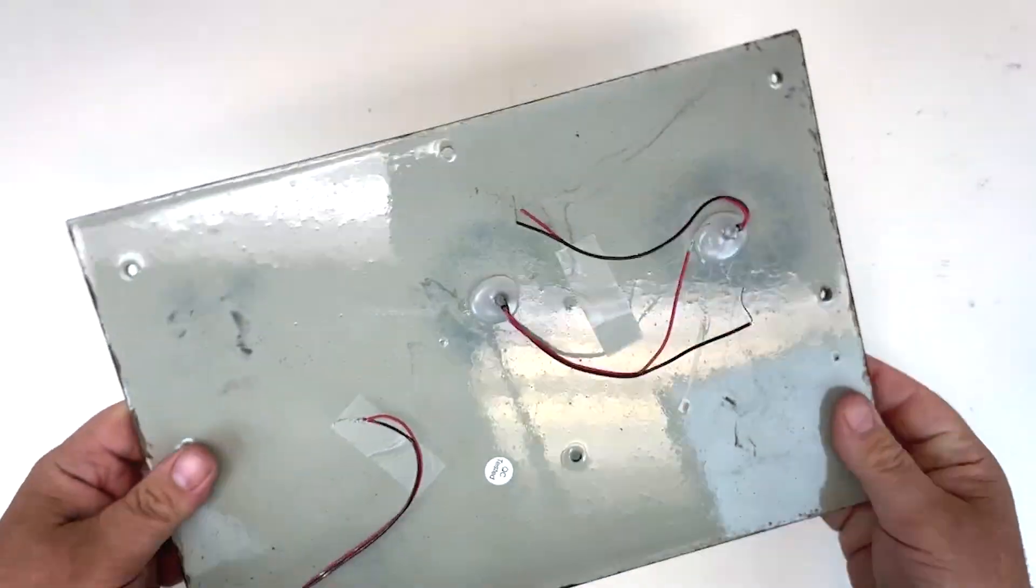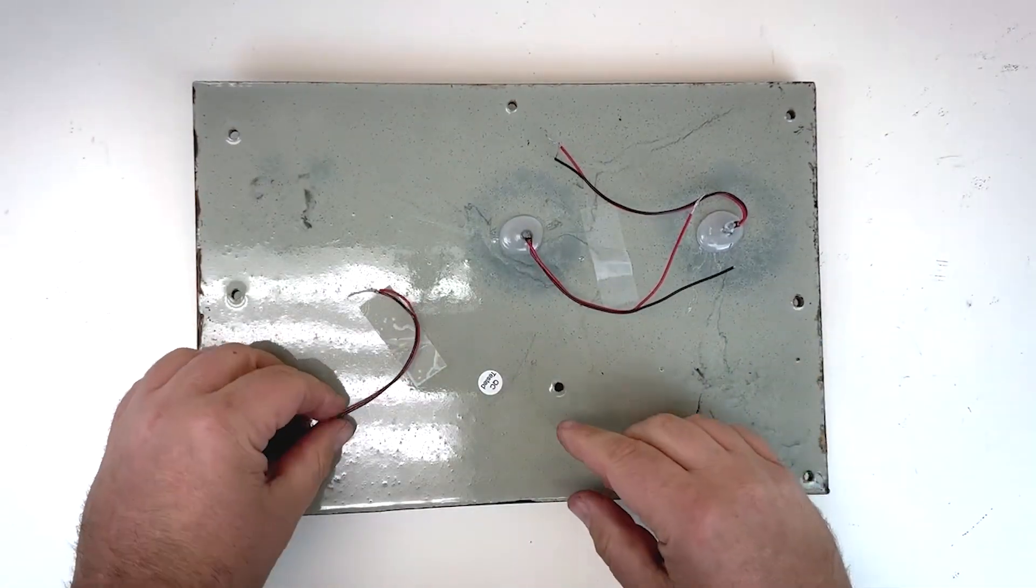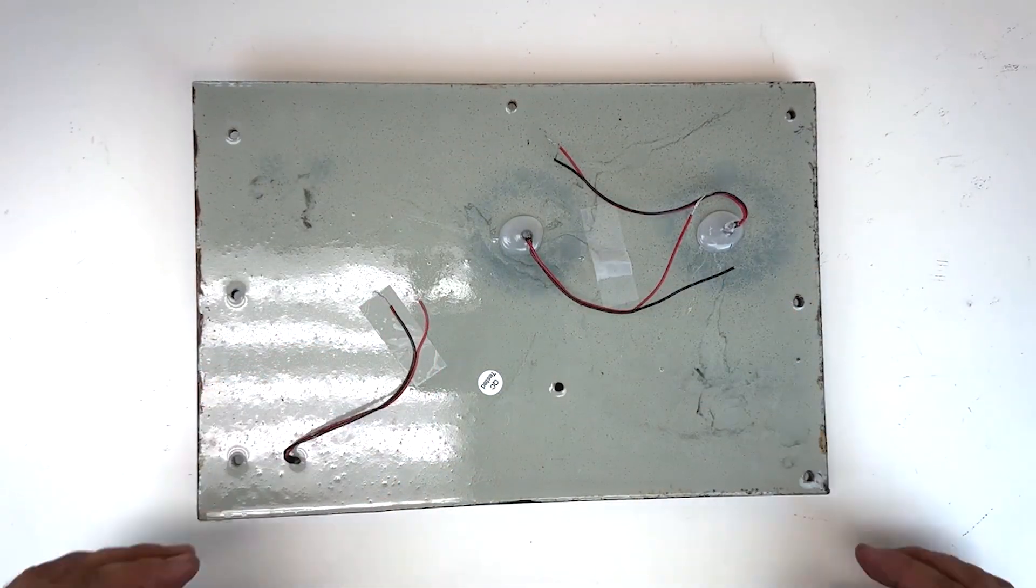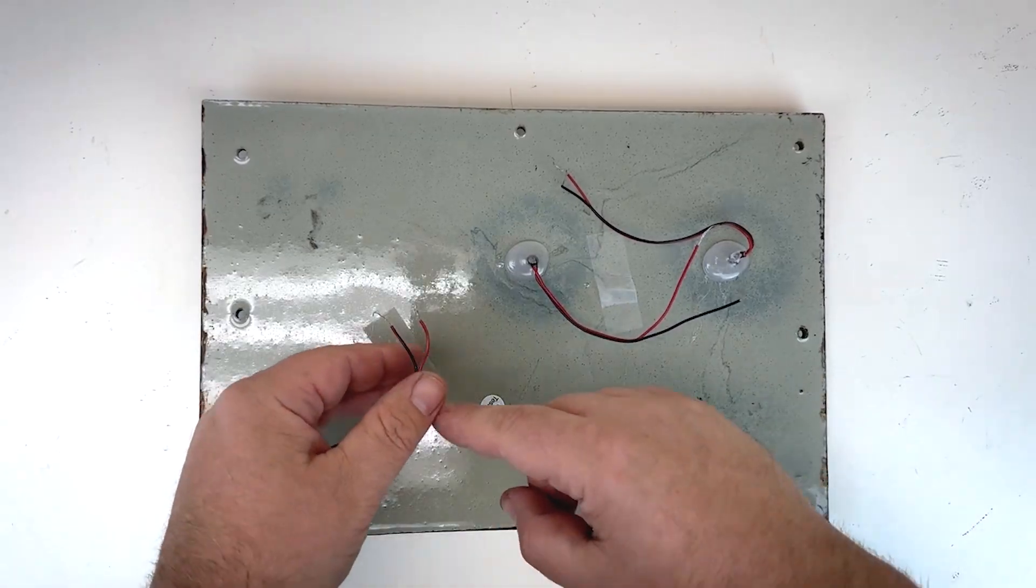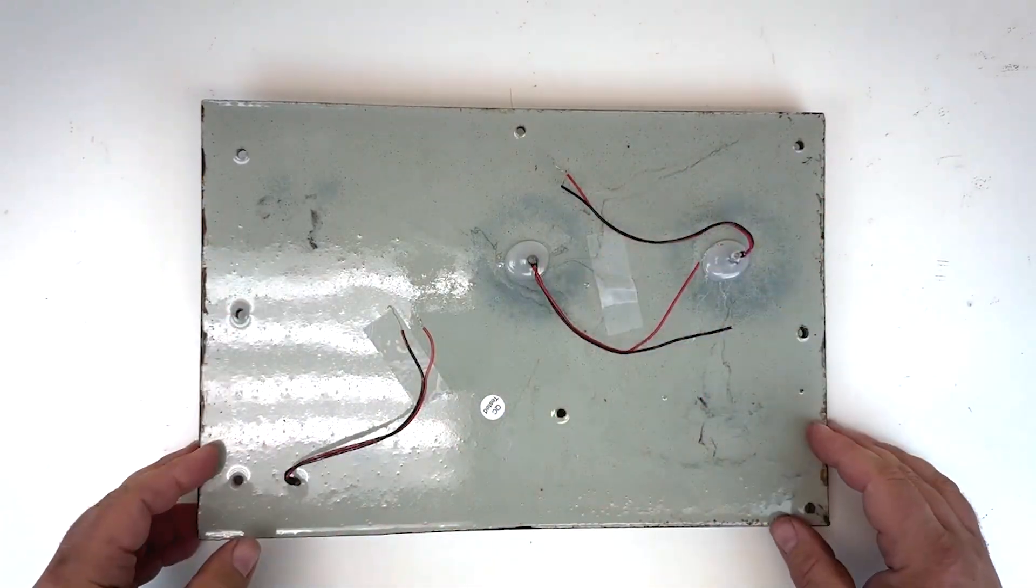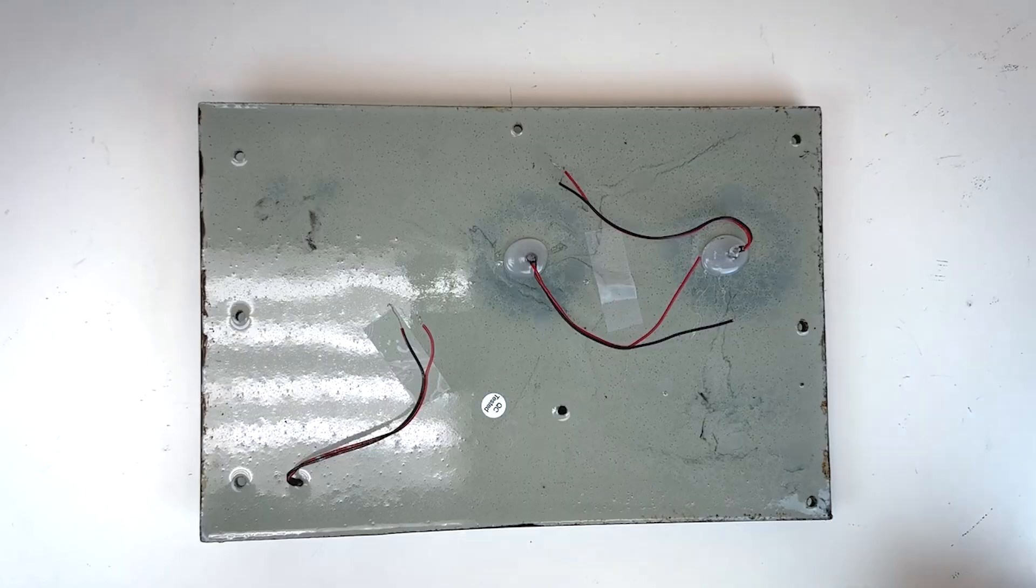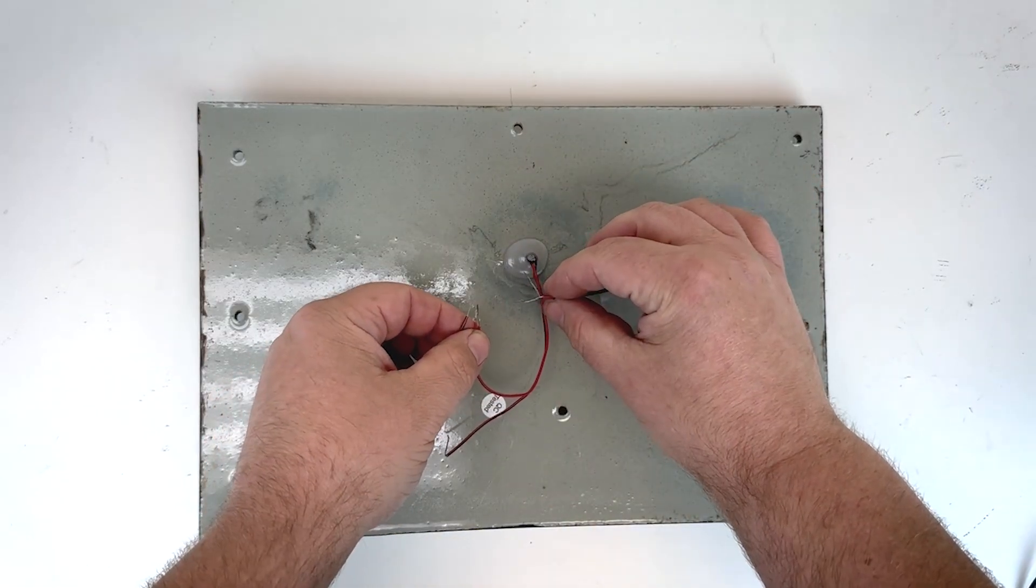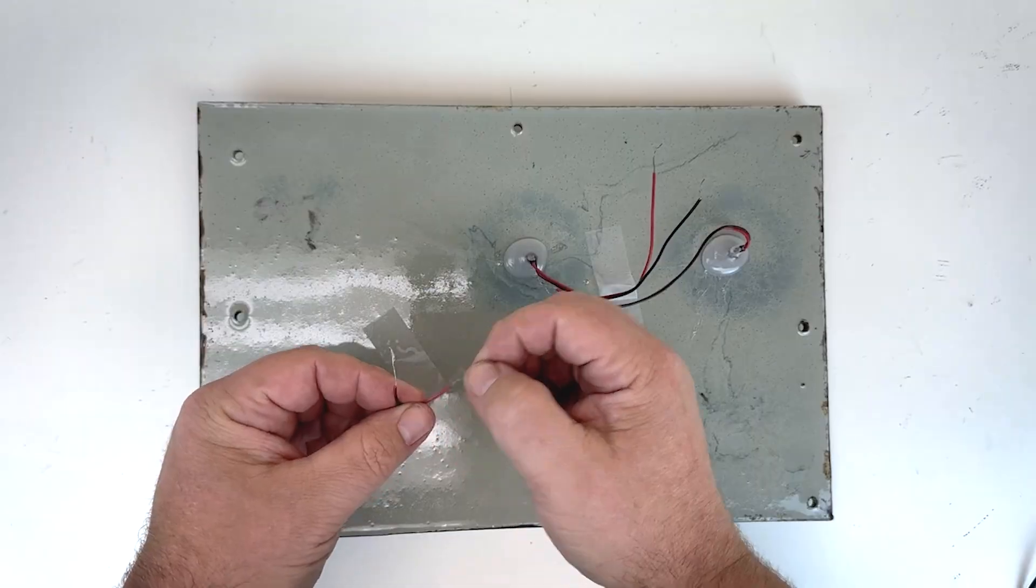So we're going to turn over the panel so that we can access the wires on the back and you can see each LED has a set of wires, a red and a black, positive and negative. So what we're going to do is just create one big circuit where all of these are shared together and then jump that over to a power supply. Now because the wires are not all quite long enough to reach each other, we're going to extend this wire first.